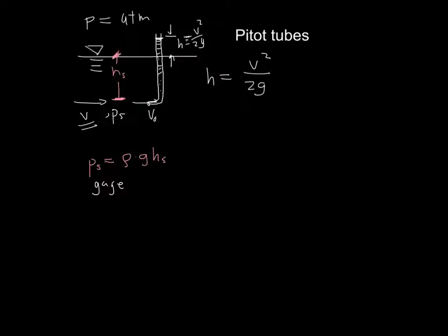What do we have for the pressure inside here? Let's call that P naught. Inside this tube, P naught is equal to the hydrostatic pressure plus the dynamic pressure, which is rho V squared over two.